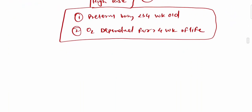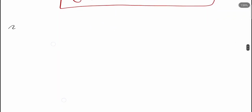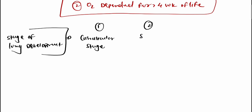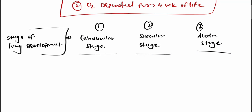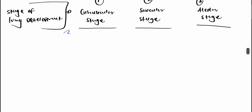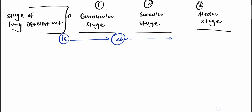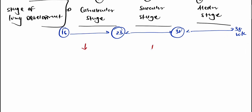Now let's see the stages of lung development. The first stage is the canalicular stage, present from 16 to 23 weeks. The second stage is the saccular stage, from 23 to 32 weeks. The third stage is the alveolar stage, present from 32 to 38 weeks.